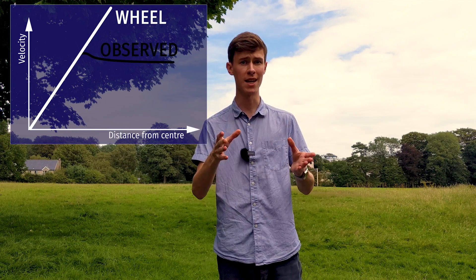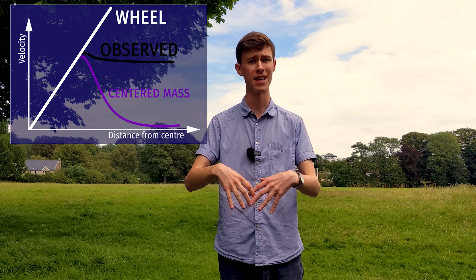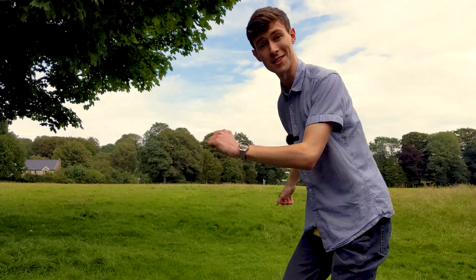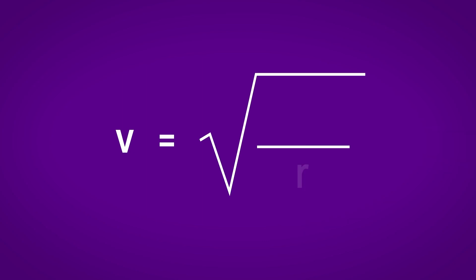So galaxies don't rotate like a bicycle wheel and they don't rotate as if they have mass concentrated at the center. So what's causing this rotation curve? The answer is dark matter. Let's try to see how dark matter can explain the observed rotation curves. We can use the equation for speed of stars in orbit around a galaxy to get some understanding of what's going on.